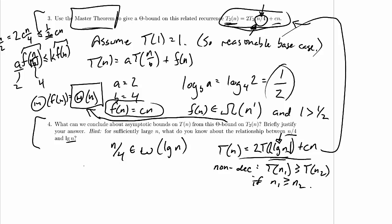I'm not going to prove it, but basically T2(n) is greater than or equal to T(n). So the theta bound on T2